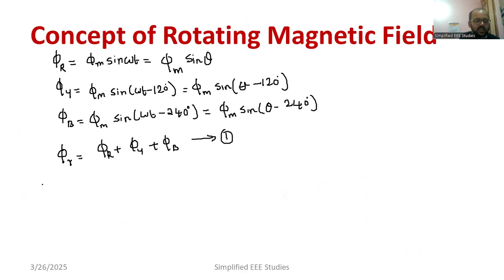So let me start with case number 1. First case. Case number 1. I am assuming that initially theta equal to 0 degree. Therefore, Φ_R is written as Φ_M into sin θ. That means sin 0 that is equal to 0. Φ_R equal to 0.